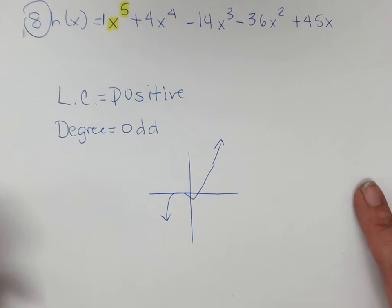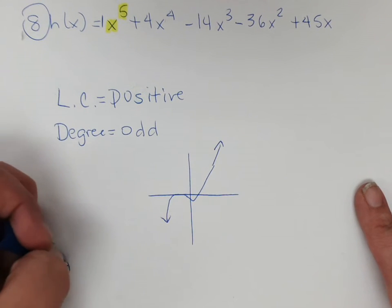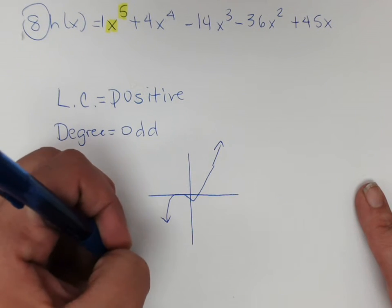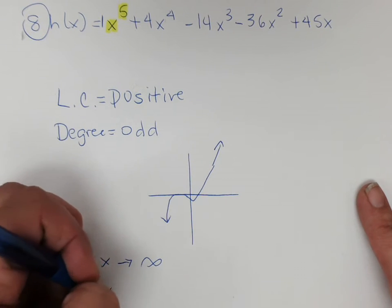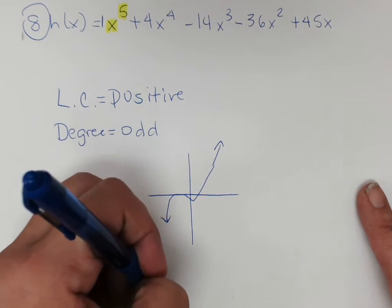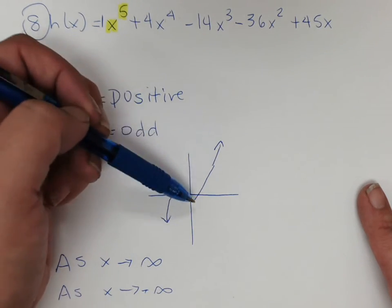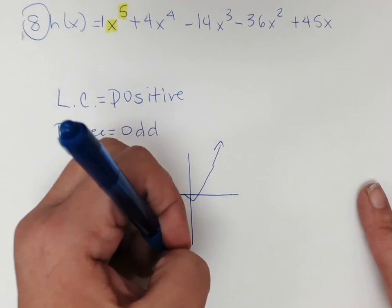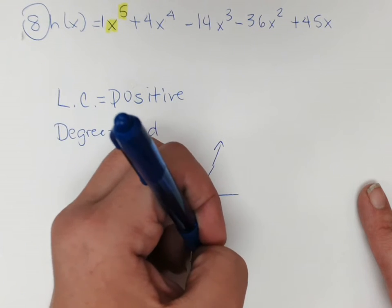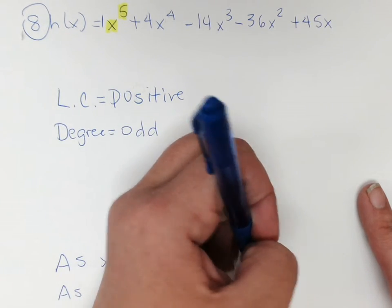Well, how do we write end behavior for that, right? As x approaches positive infinity, and I'm going to go ahead and write as x approaches negative infinity. What we see here is we're going off the right side, it's positive, it's rising. So f of x approaches positive infinity.